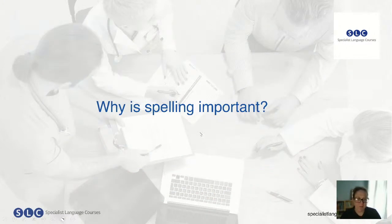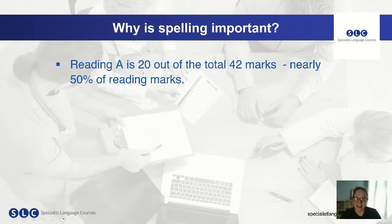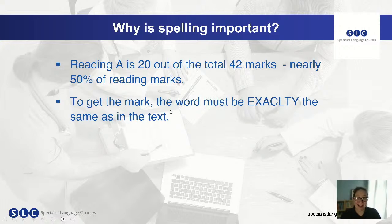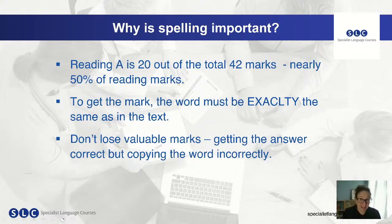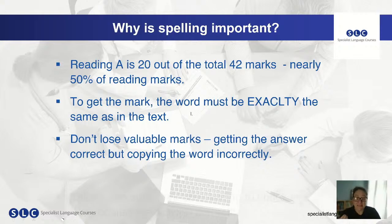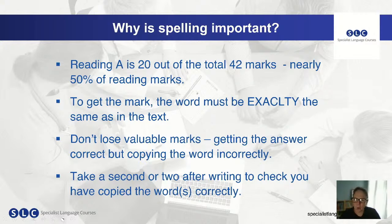So why is spelling important? Reading A is 20 marks out of the total 42 marks in the whole reading paper — that's nearly 50% of the reading marks. To get the mark, the word must be exactly the same as in the text. Don't lose valuable marks by finding the correct answer but copying the word incorrectly. Always take a second or two after writing to check you've copied the words accurately, particularly if it's a long word such as a medical condition or medication.